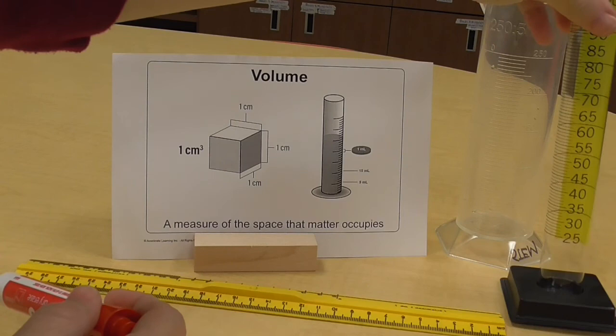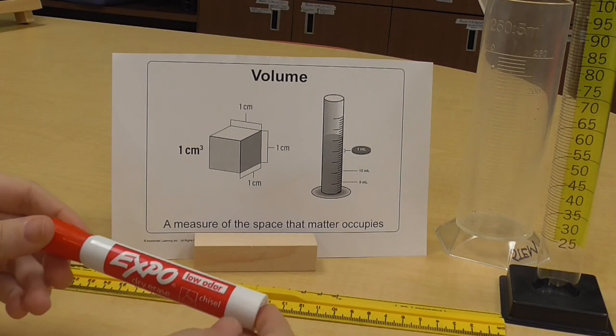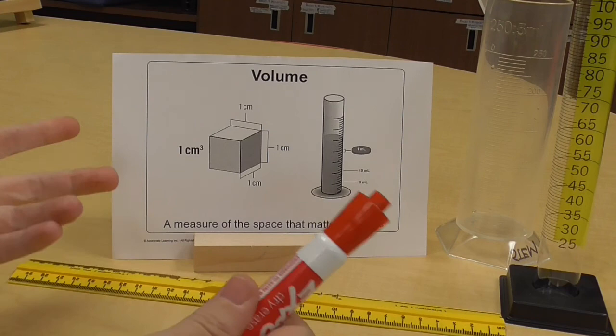And I would place water inside the graduated cylinder. I would plop my irregular shaped item inside there, and I would see the displacement of the water and do some calculations.